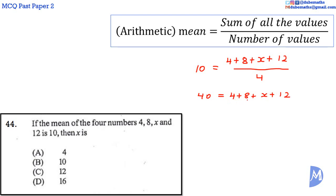4 plus 8 is equal to 12. 12 plus 12 is equal to 24. 40 is equal to 24 plus x. We are going to subtract 24 on both sides, to remain with x alone on the right-hand side.